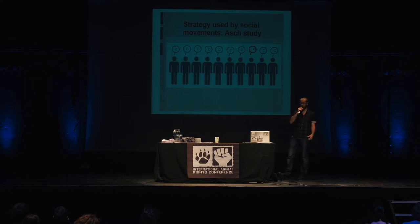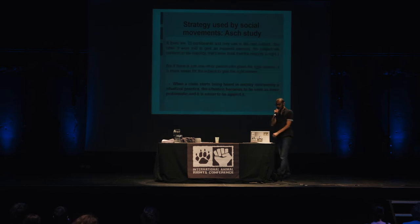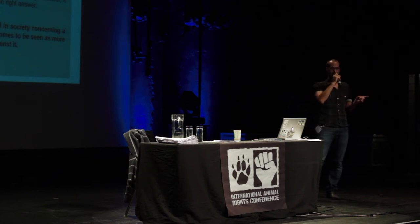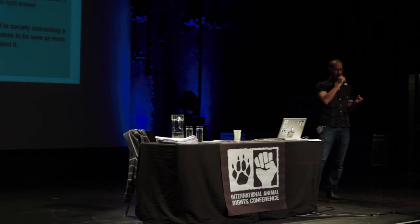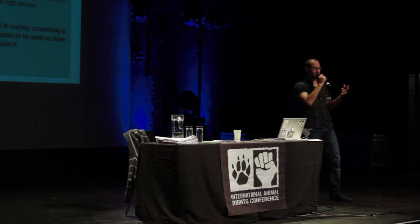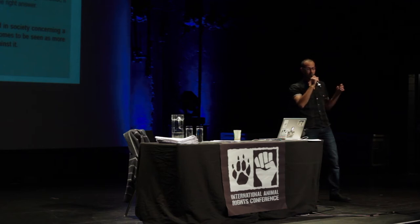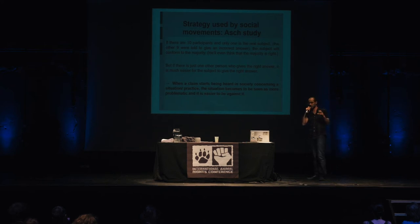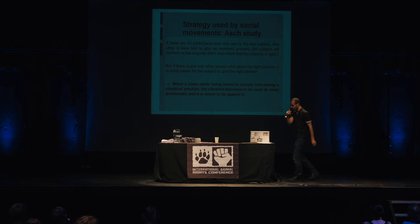This shows how public pressure works on the perceptions of individuals. They made the same study with a small change: just one person among the nine said the real answer. Statistically, it became easier and easier for the last person to give the correct answer. The more people who express the right answer — saying A — the more the real subject answers correctly, because he sees there is no unanimity on the question.